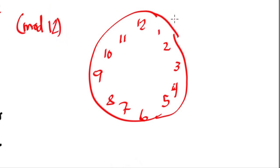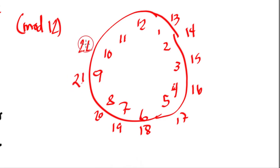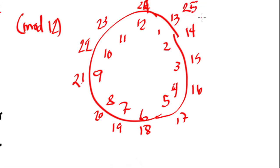After 12, there's 13 — and in military time, 13:00 corresponds to 1 o'clock on a standard clock. Then 14, 15, 16, 17, 18, 19, 20, 21, 22, 23, 24 — after that, 25 would land on the position of 1 again. We can also go in reverse: 0 is at 12, negative 1 is at 11, negative 2 at 10, negative 3 at 9, and so on.